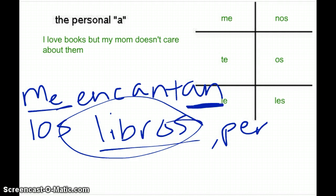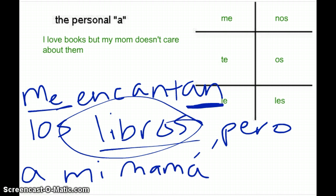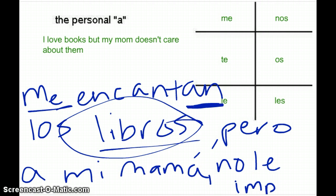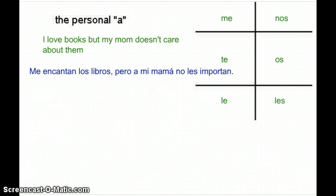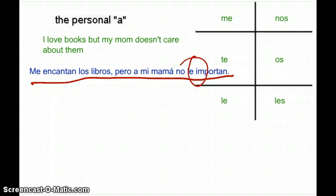Continuing the sentence: pero a mi mamá no le importan. Using importar (to matter/care about) here because she doesn't care about books. It's my mom who doesn't care, and it's the books she doesn't care about — that's what's going on. The full sentence is: Me encantan los libros, pero a mi mamá no le importan.